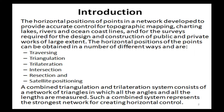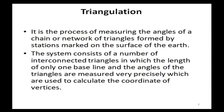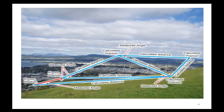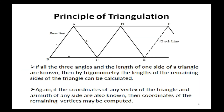Such a combined system represents the strongest network for creating horizontal control. Triangulation is the process of measuring the angles of a chain or network of triangles formed by stations marked on the surface of the earth. The system consists of a number of interconnected triangles in which the length of only one baseline and the angles of triangles are measured very precisely, which are used to calculate the coordinates of vertices.